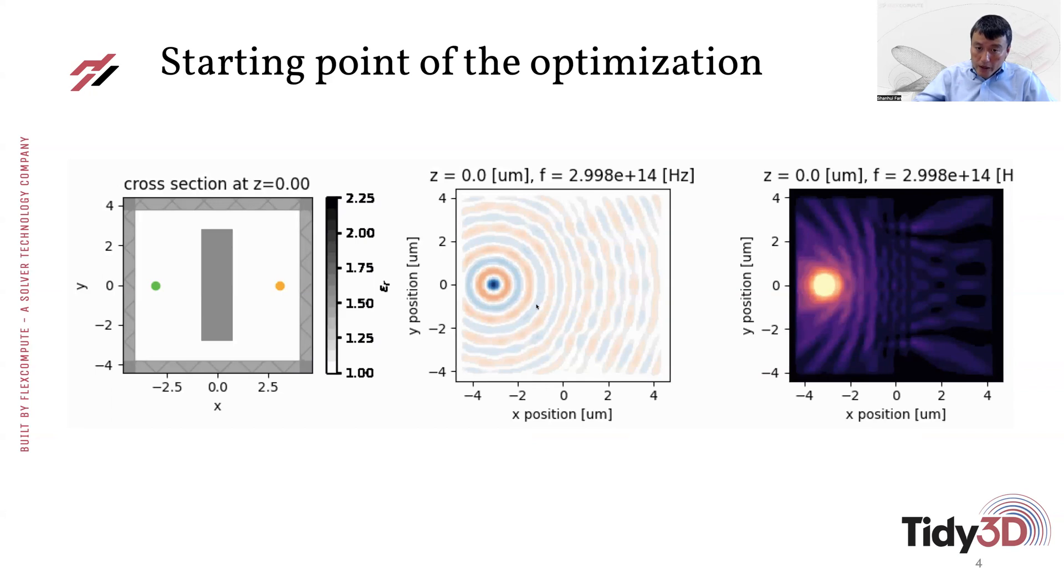And as you can see, in the middle panel here, which shows the electric field distribution, and the right panel here, which shows the intensity, not surprisingly, this device does not focus at all. So in the field distribution, for example, in the middle here, what you see is simply a cylindrical wave emitting from the point source and perhaps perturbed a little bit by this uniform dielectric slab.